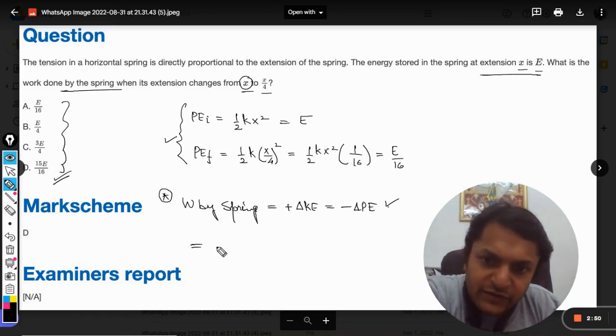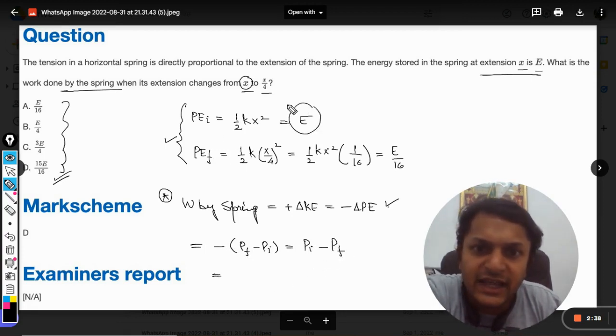we use this formula. It will be equal to minus potential energy final minus potential energy initial. Because it is negative, it will be initial minus final, so initial is E